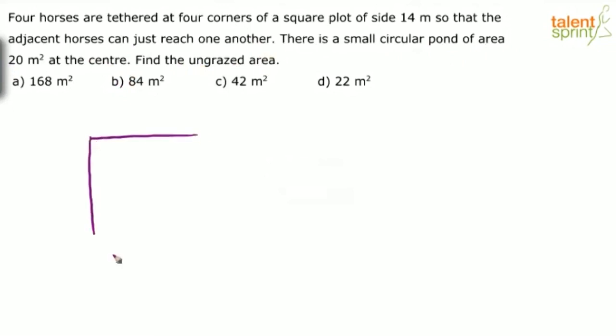So basically there is a square plot. Let us assume this is a square plot. What is the side? 14 meters. The side is 14 meters. Here also it is 14 meters.